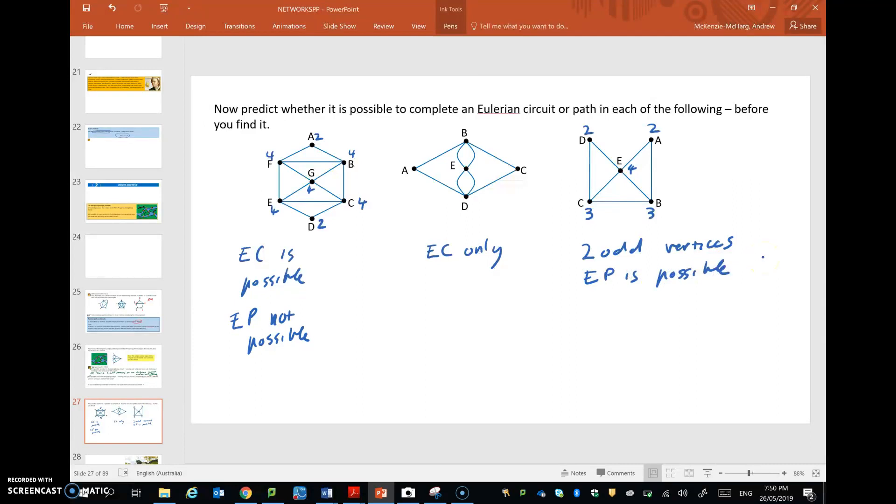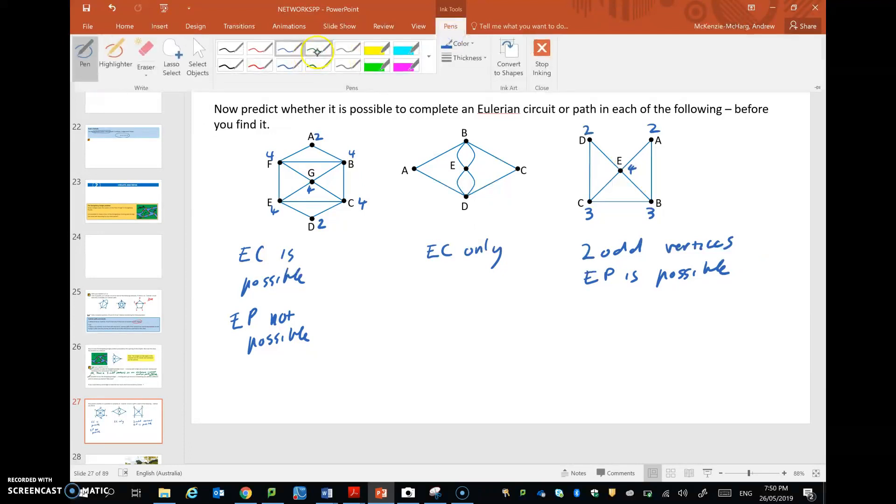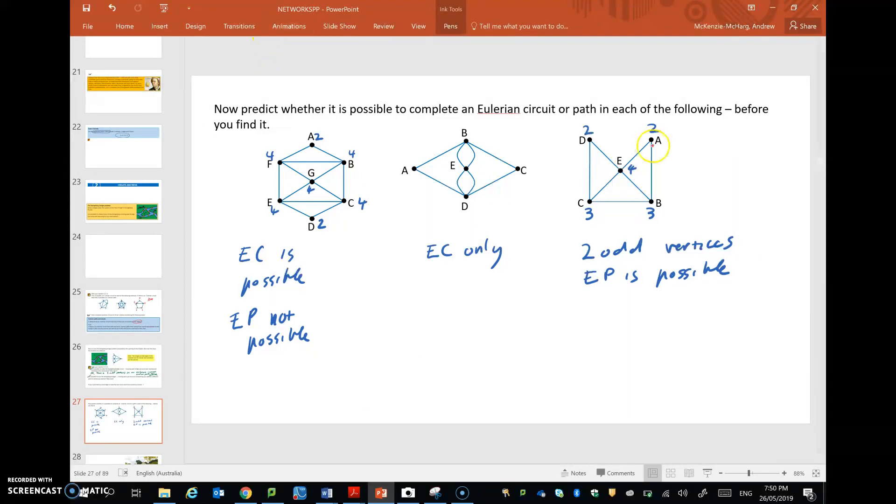Now an interesting fact is that for the Eulerian path to work, you need to start and finish at the one or the other of the odd vertices. So we couldn't start at A here. We need to start at C or B. So we could do that, go like this, and we're back from starting at C, finishing at B, crossing each edge once and only once.